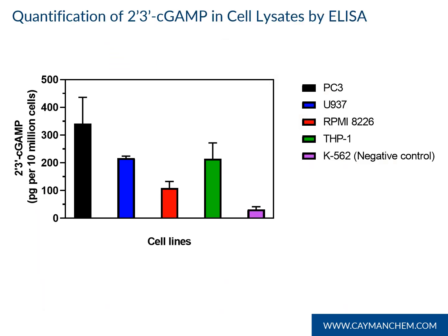Quantification of 2-3 cGAMP in cell lysates by ELISA. Several cell lines were lysed with EMPER, clarified, and 2-3 cGAMP was measured by ELISA. The error bars represent standard deviation from multiple experiments.